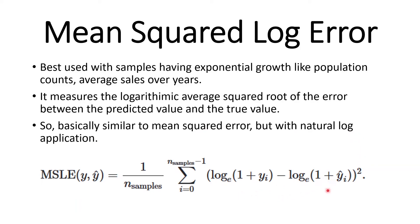As you can see right here, the formulas are extremely similar except we are applying natural log: log of 1 plus the true value minus natural log of 1 plus the predicted value, and you are squaring all of that.